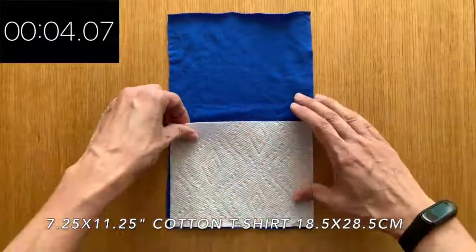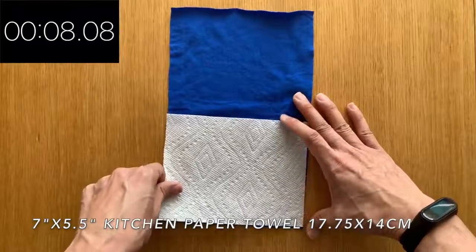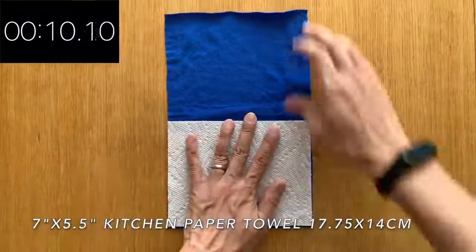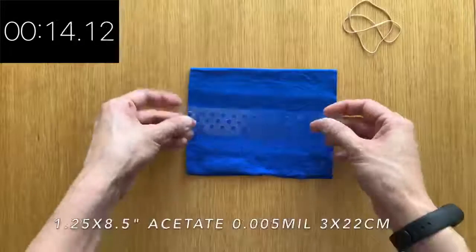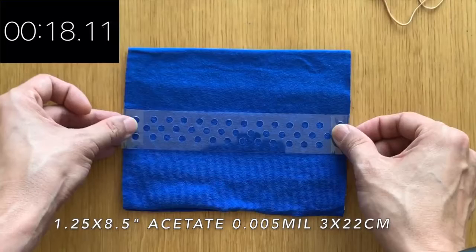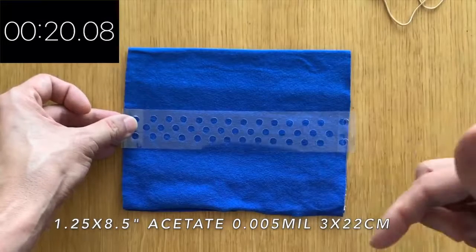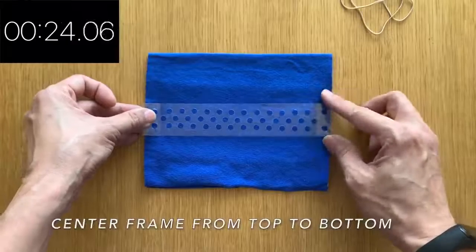So when we place the paper towel in, it should fit nicely within it. We're going to place this piece of acetate, which I'll have the size and description below, and we're going to place this in the center.